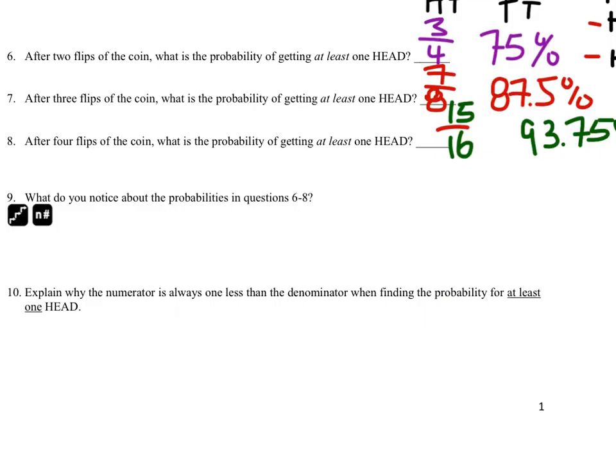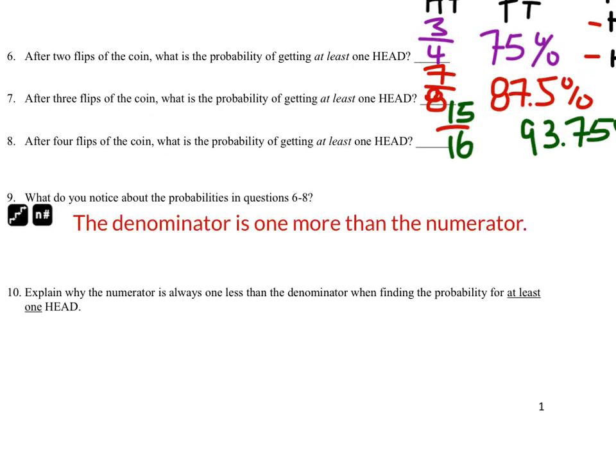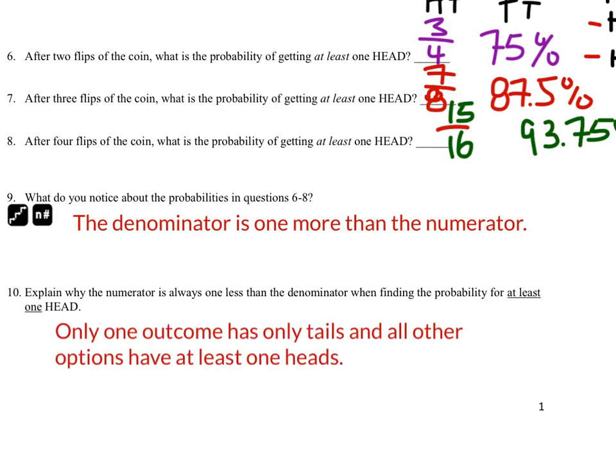Looking at these probabilities from questions six through eight, notice that the denominator is always one more than the numerator. That happens because there is only one outcome that produces all tails, which means all other outcomes have at least one head.